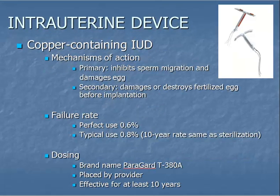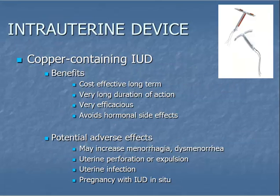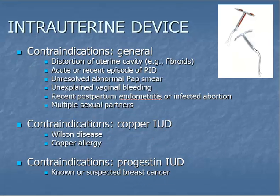The other type of IUD contains copper. Its mechanisms of action, failure rate, and dosing are listed here. This is the IUD that can be used for emergency contraception, and it contains no hormones. Benefits and potential adverse effects of the copper-containing IUD are listed here. This slide also lists contraindications for both the progestin-containing and the copper-containing IUDs.